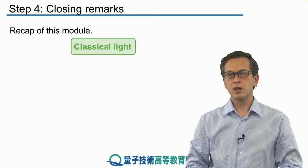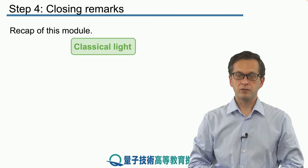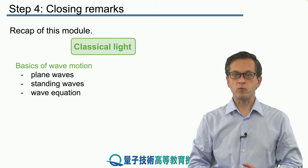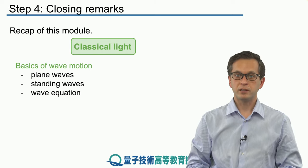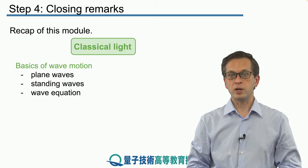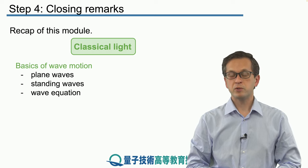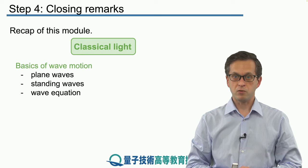We started this module talking about classical light. We introduced the notion of wave motion, plane waves, standing waves, and this culminated in the introduction and derivation of the wave equation. In the previous module, we treated light as a propagating ray. In this module, we started with geometric optics, meaning we looked at waves.